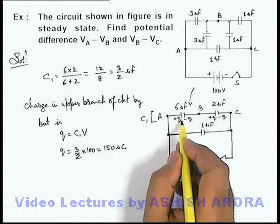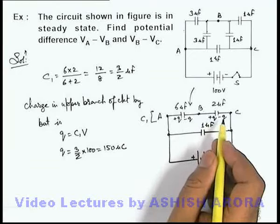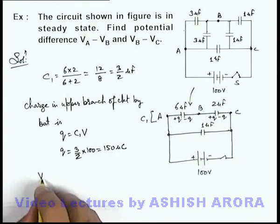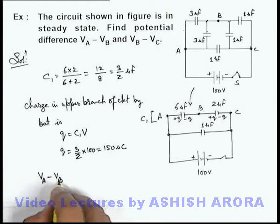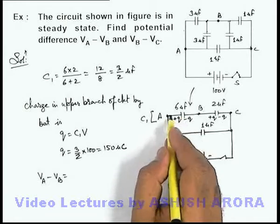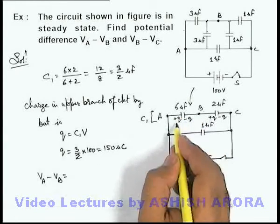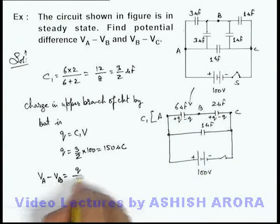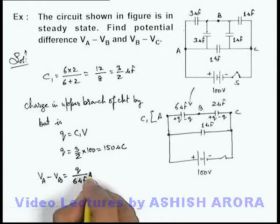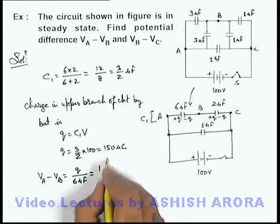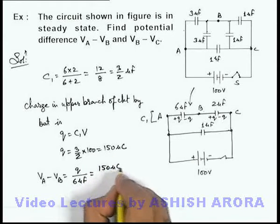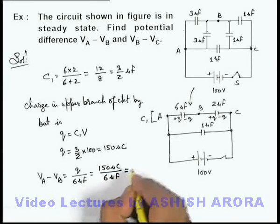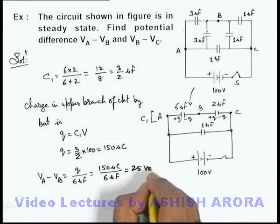And using this charge we can easily find out the final potential differences like here. V_A minus V_B, which is the potential difference across 6 microfarad capacitor, so this can be written as q by 6 microfarad. If we substitute the magnitude of charge is 150 microcoulomb by 6 microfarad, this is equal to 25 volt.